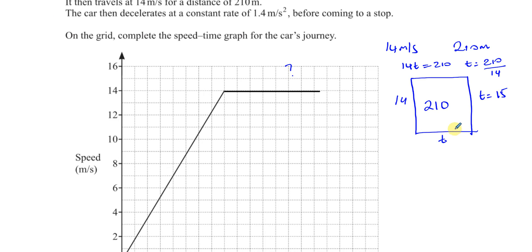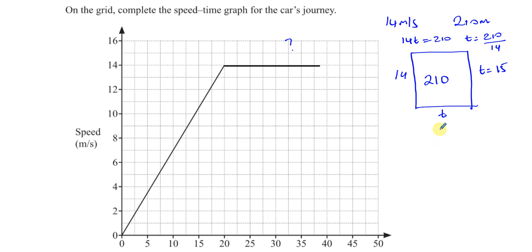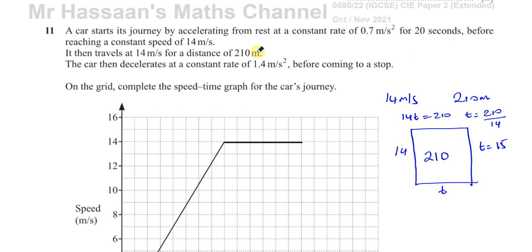So the constant speed section goes from t = 20 seconds to t = 35 seconds. That completes the first part of the graph.